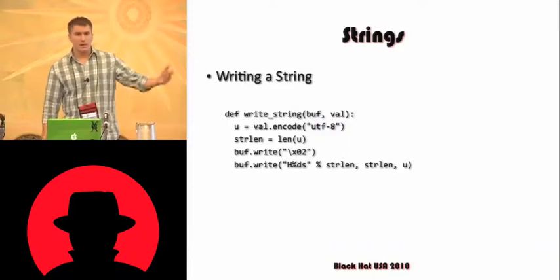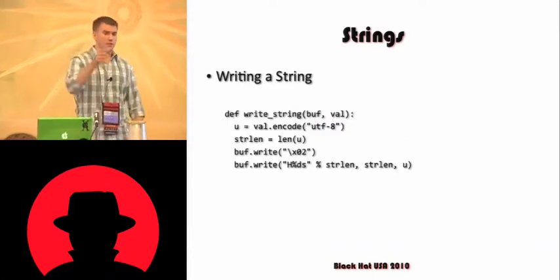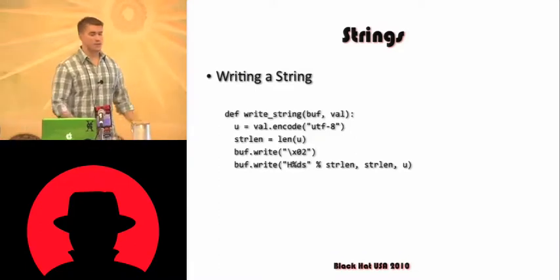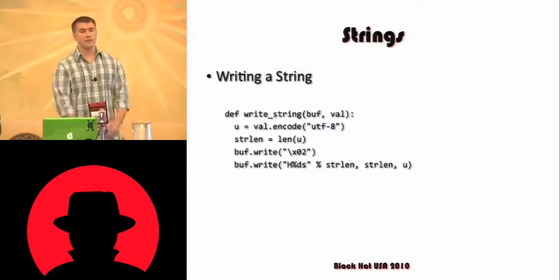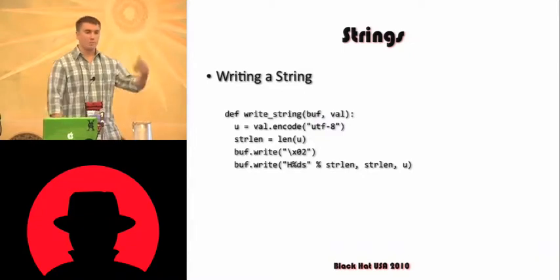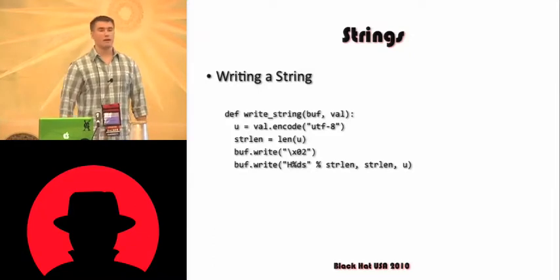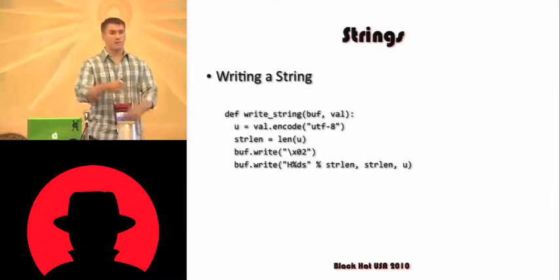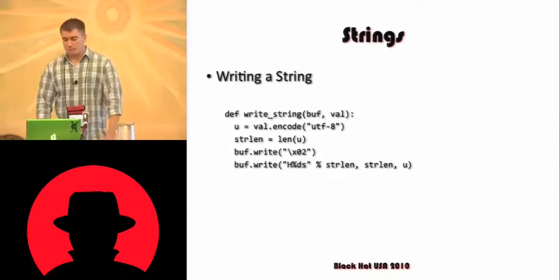Writing a string — going into reverse and actually sending stuff to the server — is basically just the opposite. We encode our string into UTF-8, get the length of the string, write our type marker, and then write our string with the length preceded before it. And that's it.